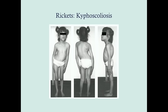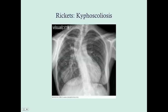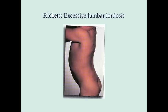This is kyphoscoliosis, which looks just like regular scoliosis — very pronounced here. And here is a radiograph showing excessive lumbar lordosis.